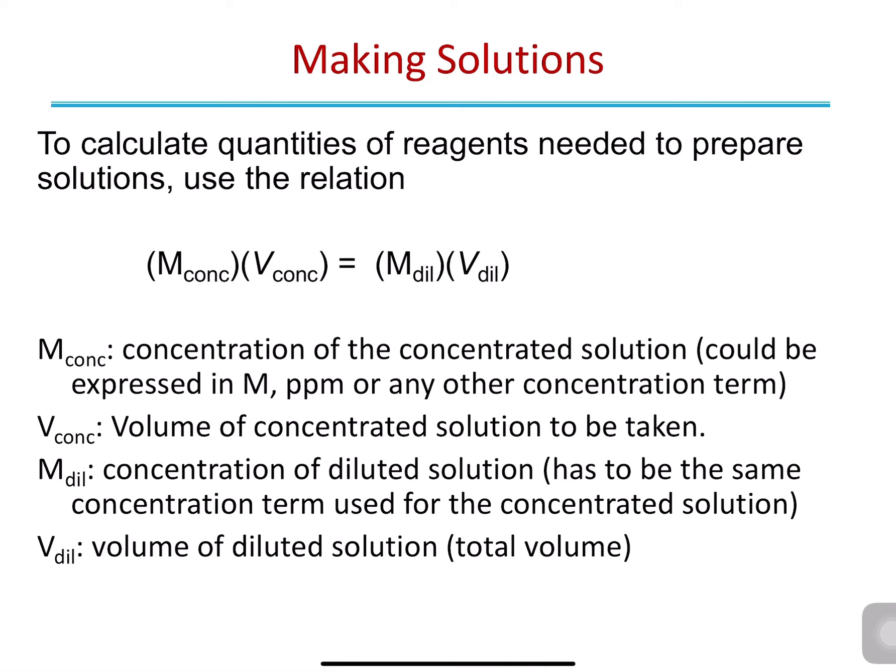If you use parts per million on one side, you have to use parts per million on the other side. If you use weight per weight or weight per volume, you have to use the same on the other side. As long as you use the same term, it's absolutely fine. M_diluted is the concentration of the diluted solution, V_concentrated is the volume of concentrated solution needed to make the diluted solution, and V_diluted is the final total volume of the diluted solution.